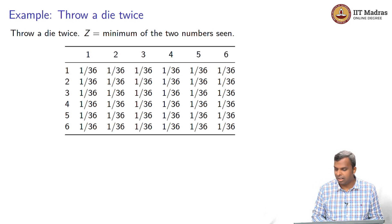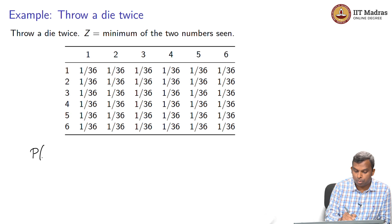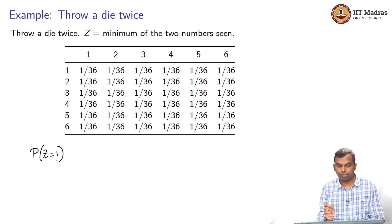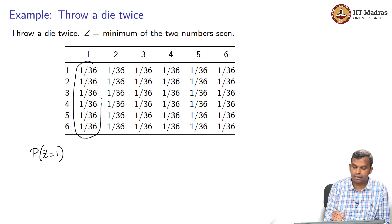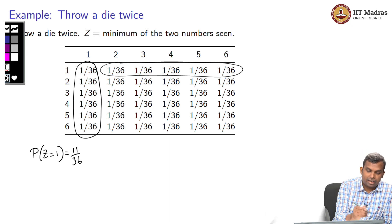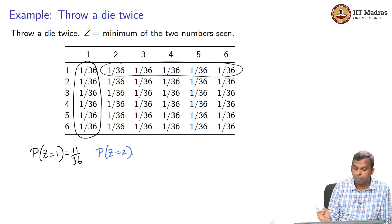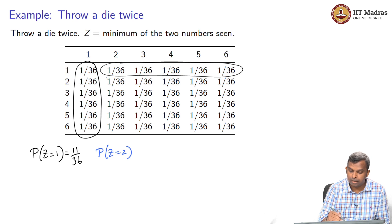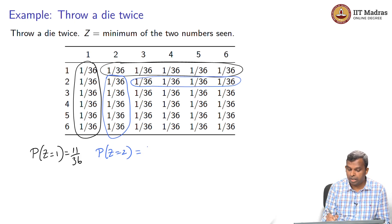Let us execute this for a simple experiment: a die is thrown twice and Z is the minimum of the two numbers seen. What is the probability that Z equals 1? The minimum of the two numbers should be 1, giving 11 out of 36 cases. For probability that Z equals 2, the minimum of the two will be 2 in those cases, giving 9 by 36.